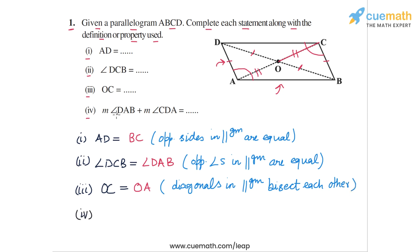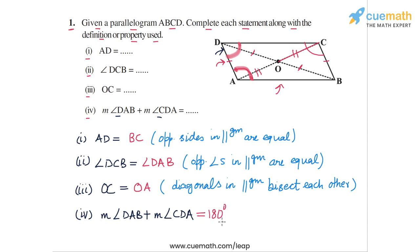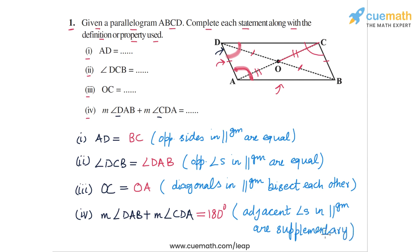For statement four, we have the measure of angle DAB plus the measure of angle CDA. Angle DAB is this angle here, and angle CDA is this angle here. These two angles are adjacent angles of the parallelogram — they are interior angles on the same side of transversal AD and the parallels AB and DC. So their sum must be equal to 180 degrees. The statement is completed as 180 degrees, and the reason is that adjacent angles in a parallelogram are supplementary.